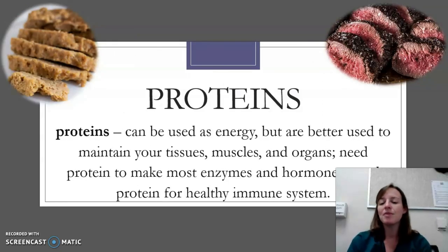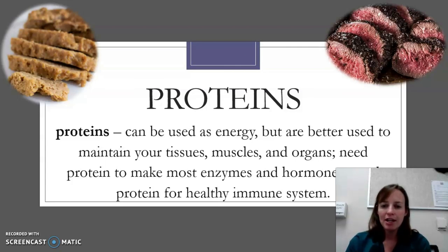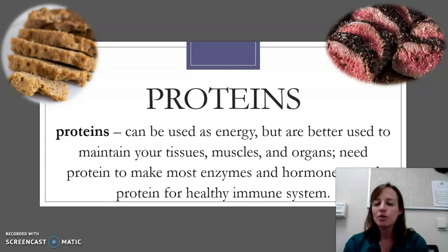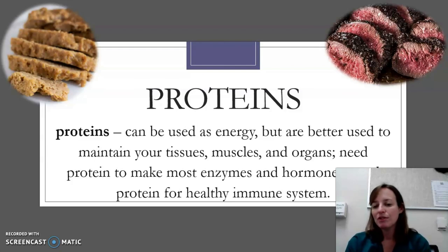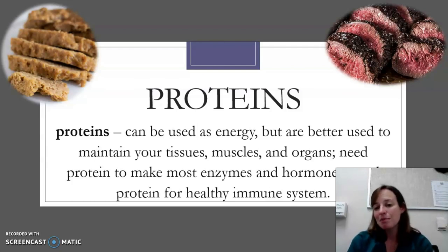Proteins can be used for energy — they have four calories per gram — but they are better used to maintain your tissues, muscles, and organs. You do need protein to make most of your enzymes and your hormones, and you need protein for a healthy immune system because your antibodies are made of protein.